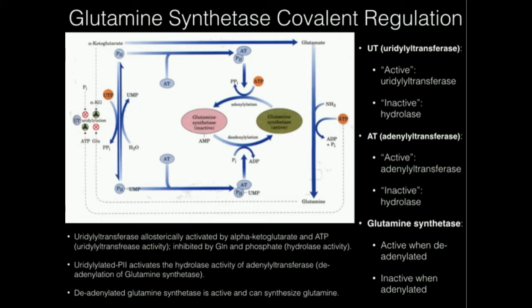What transfers an adenylate group? An adenylate transferase — labeled AT here. This adenylate transferase can form a complex with a protein called P2. Simplistically, when the adenylate transferase is in the active state, it acts as an adenylate transferase. When it is inactive, this complex acts as a hydrolase, meaning it catalyzes deadenylation.